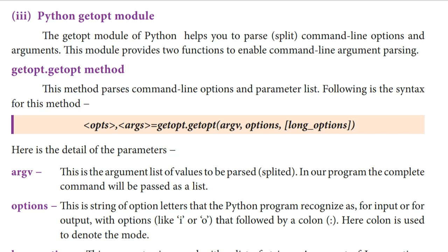This is the work of this getopt module. The getopt.getopt method — so getopt is your module. In this module we have a function called getopt, so the module name and function name are the same.